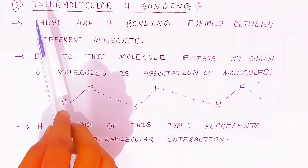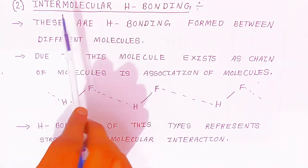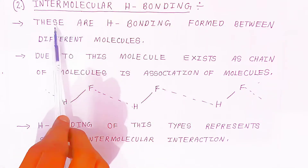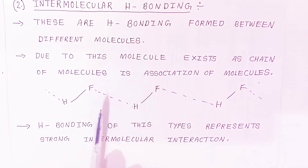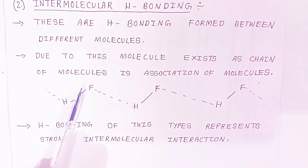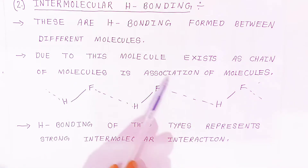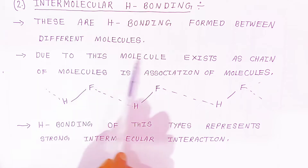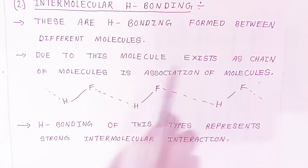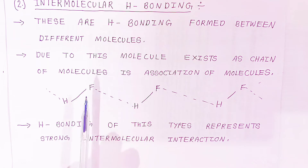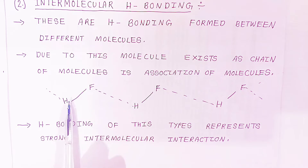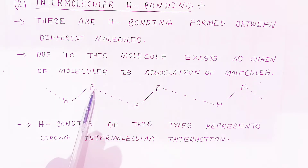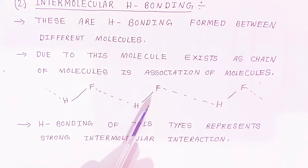The second type is intermolecular hydrogen bonding. 'Inter' means between two molecules — unlike intramolecular which occurs within a single molecule. Intermolecular hydrogen bonding is formed between different molecules. For example, in HF molecules — this is the first HF, second HF, third HF — these are all different molecules. Due to this, an exact chain of molecules forms by association, and this is the electronegative atom and hydrogen atom of HF forming the hydrogen bond.